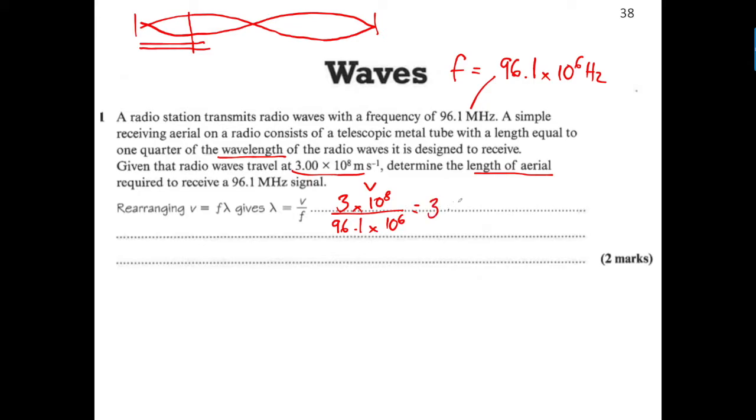3.1217481. They've given you values to three significant figures, so we should quote it to three significant figures: 3.12. But they haven't asked for the wavelength - they want a quarter wavelength. So it's λ/4, which is 3.12 divided by 4, giving 0.78 metres.